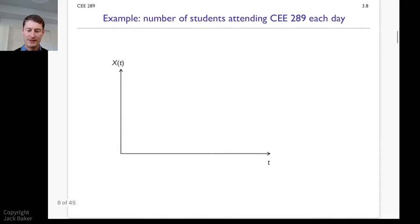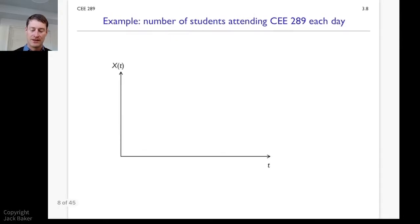If we think about the number of students attending the class each day. So now we've got t, which is a class number again. And we've got X of t, which is number of students. So the class number is going to go one, two, three, and so on. And the number of students could be zero, one, two, and so on.